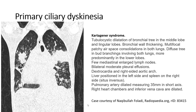Additional findings include an enlarged lung lobe, bilateral moderate pleural effusion, dextrocardia and right-sided situs, liver positioned on the left side and spleen on the right side (situs inversus), and a dilated pulmonary artery up to 35 mm, with right heart chamber enlargement.